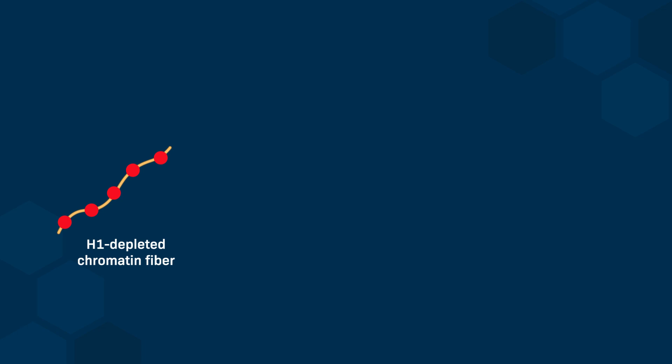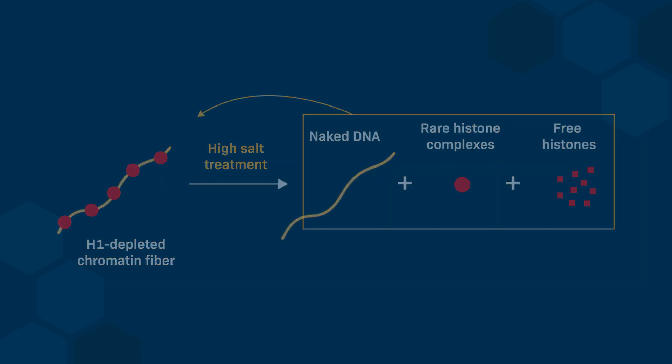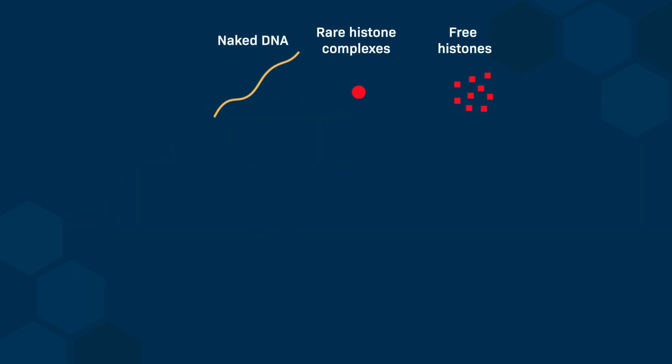Let's look at the 10 nm fiber. Treating this chromatin fiber with a high salt concentration allows for the dissociation of its components. This results in naked DNA and a few remaining core histone complexes, primarily free histones. What would happen if we now decrease the salt concentration? Rapidly decreasing the salt concentration leads to minimal changes. At most, free histones may reassociate into core histone complexes, but there will be no interaction between these complexes and the naked DNA.